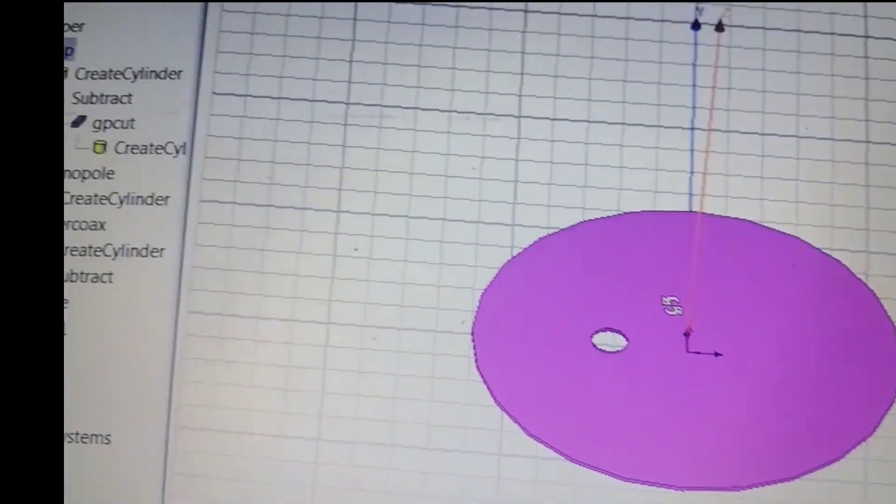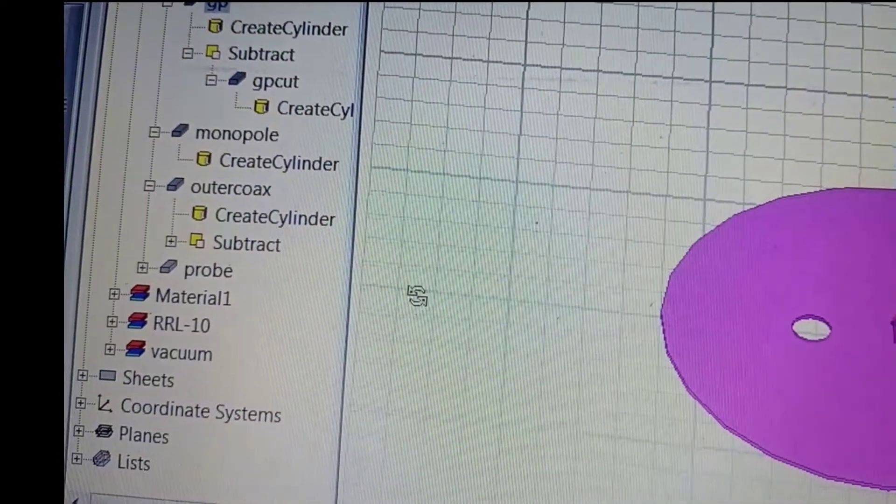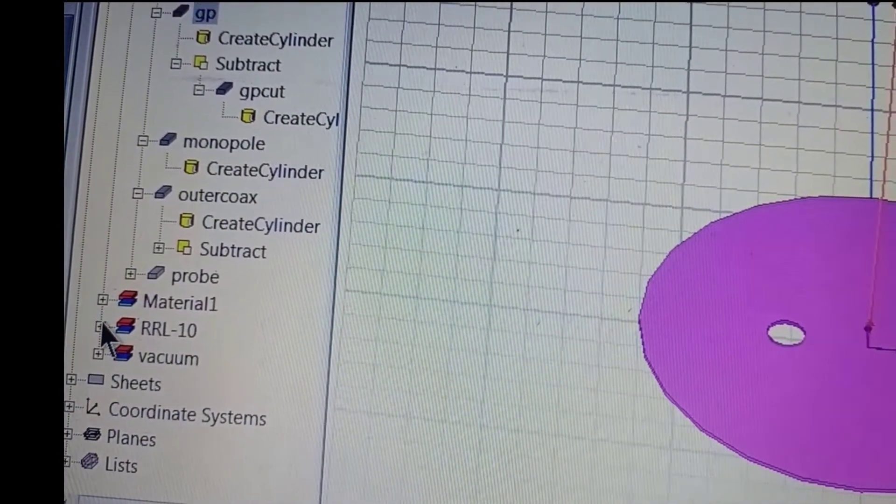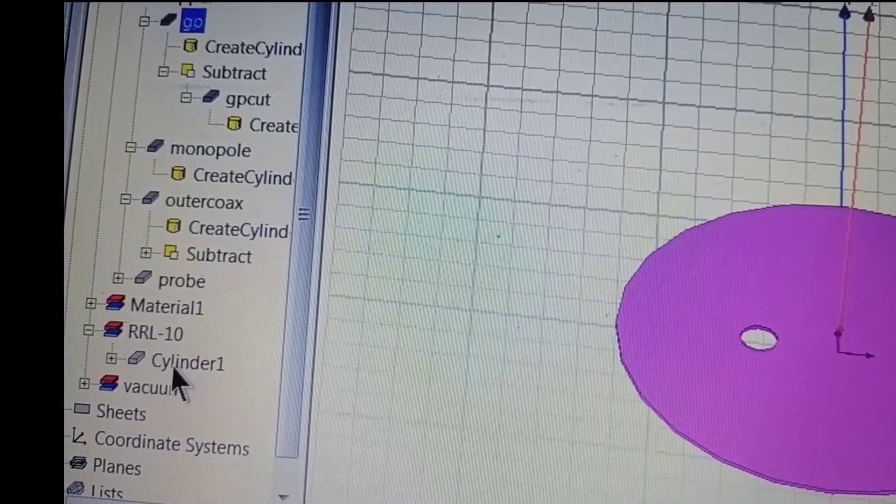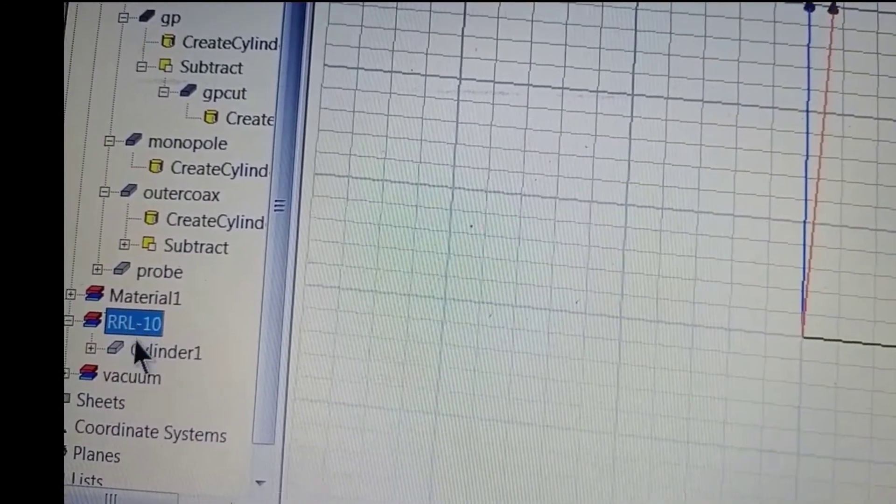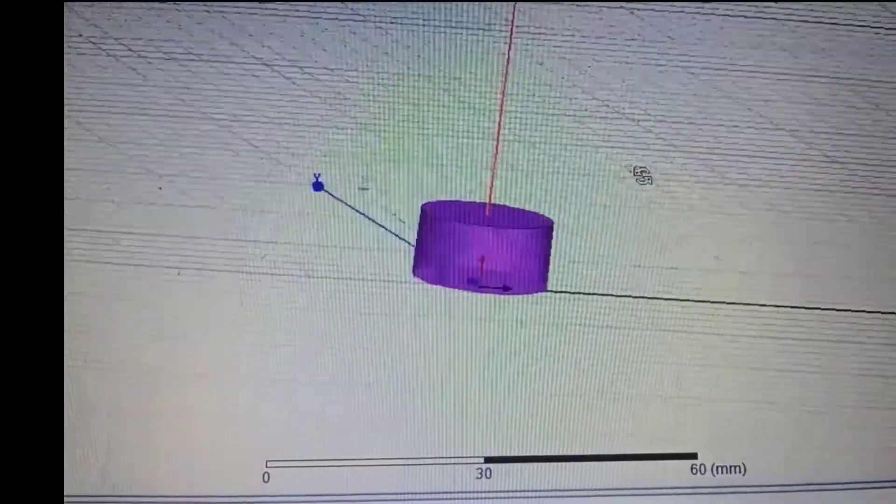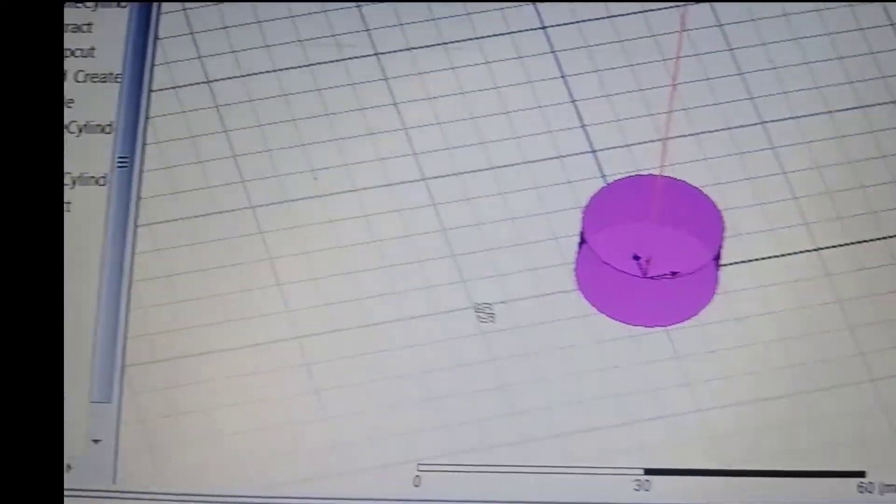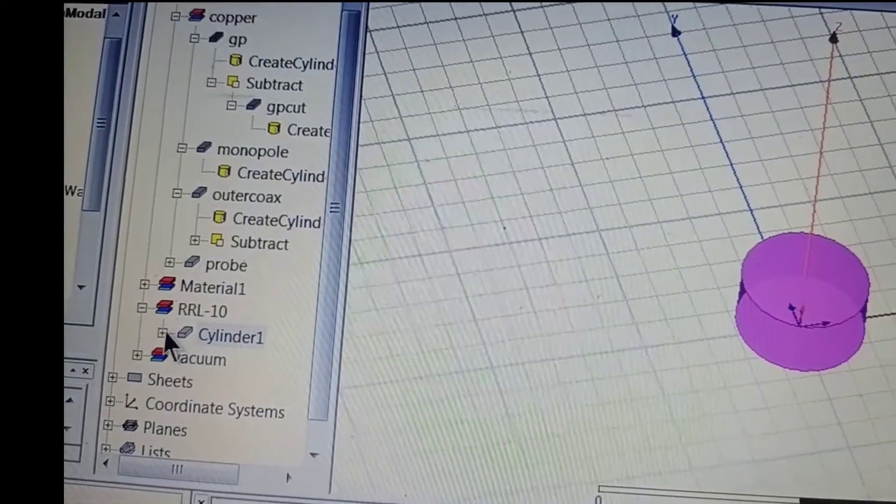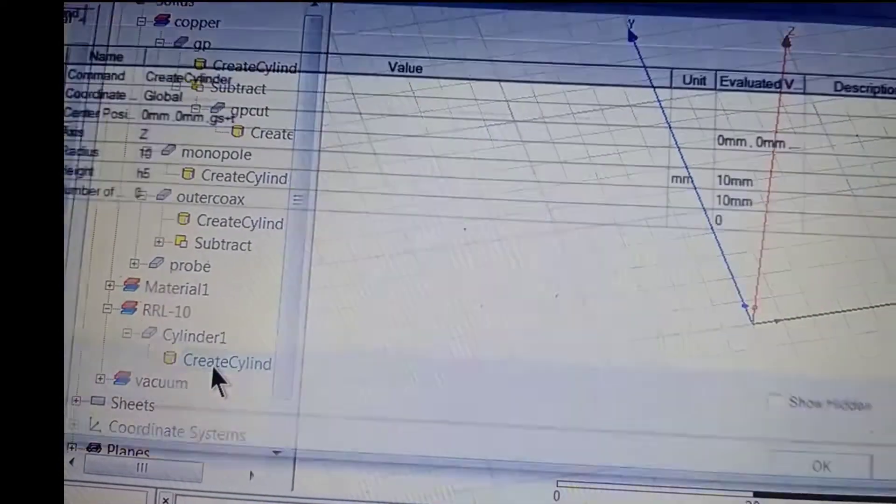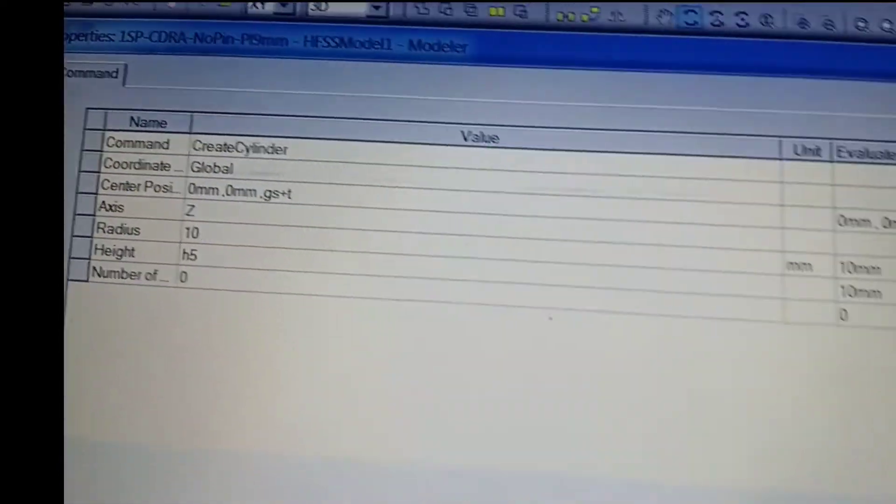DRA is of 10 mm radius, 10 mm height, and it has a cylindrical structure. And the substrate I have taken is epsilon r of 10. This is the way I am placing here.